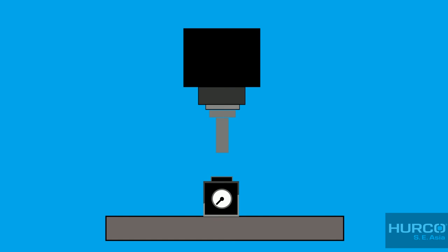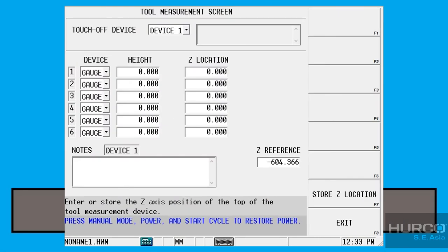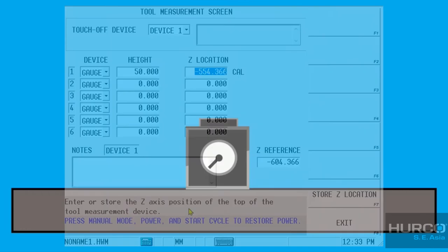Once you are done with the Z-reference measurement, machine needs to identify your daily device's height. For example, if you're using a 50 mm height gauge to do your tool setup routine, you need to key in 50 mm into control, and machine will automatically calculate the Z location. This value is very important for the machine to compensate your gauge's height during tool setup.